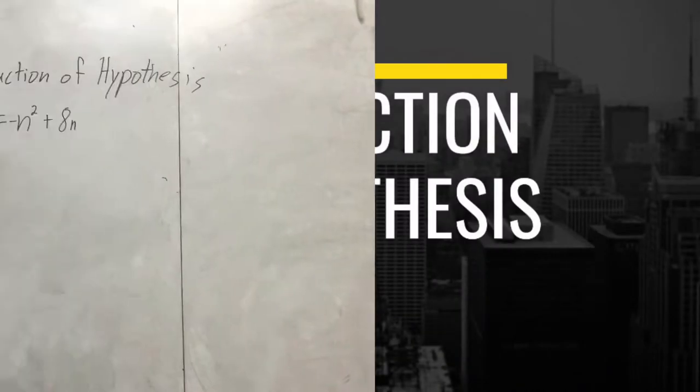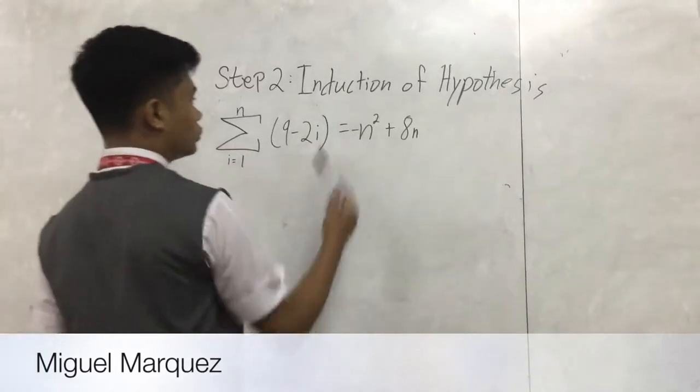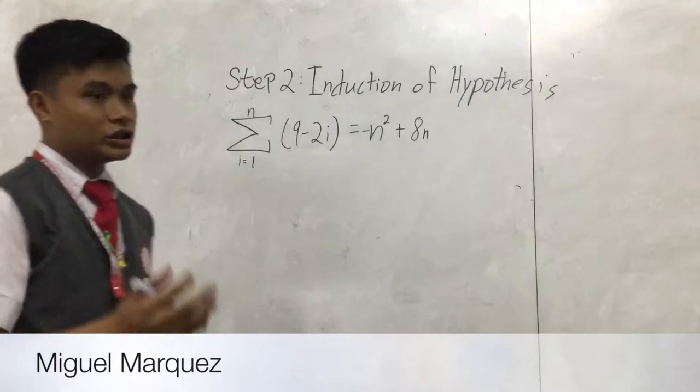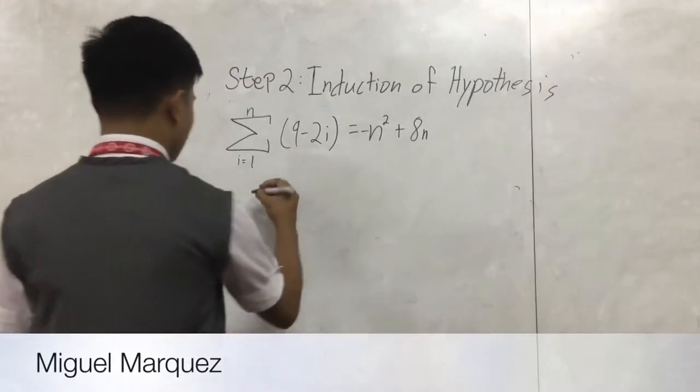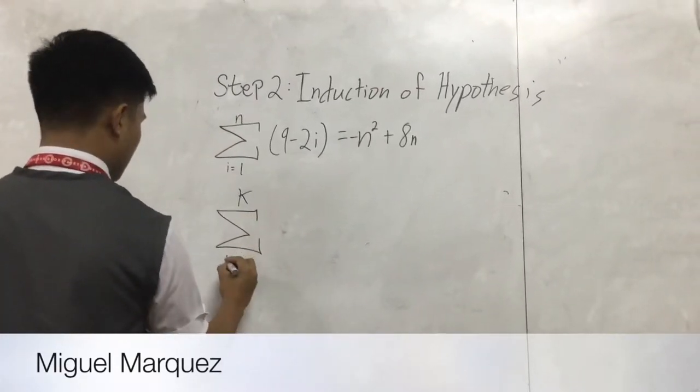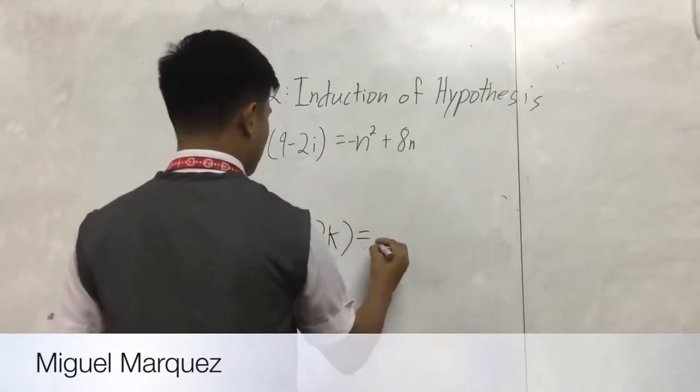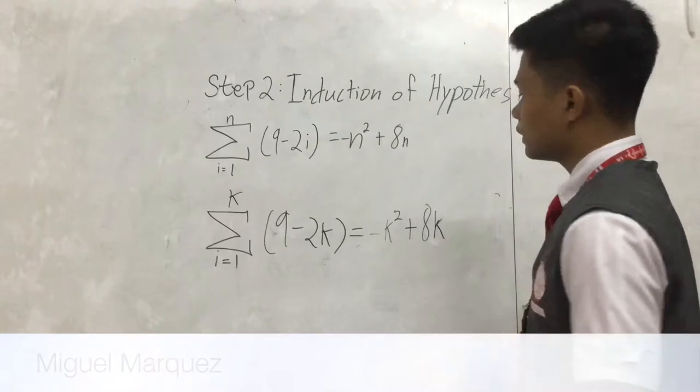Welcome guys, this is step 2 of the equation called Induction Hypothesis. All we have to do is change all variables into k. We're writing the sum from i equals 1 to k of 7 plus 9 minus 2k, which equals negative k squared plus 8k. That's all.